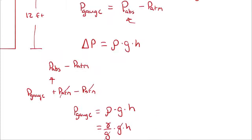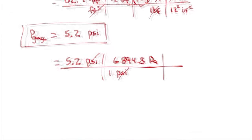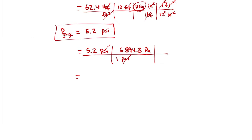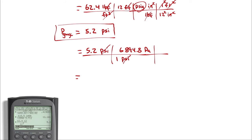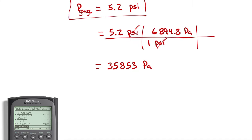I think the problem asked for Pascals, not kilopascals. So I am just going to be multiplying these two numbers together. We need 5.2 multiplied by 6,894.8. And we get 35,853, or 35.85 kilopascals.